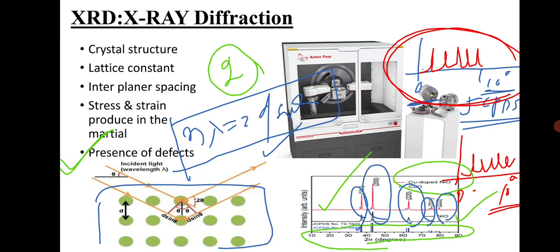This is the brief description of the XRD data and about XRD. That is why we are using XRD in order to get a lot of information about the crystal structure of the material, strain, stress, interplanar spacing, lattice constant, and the presence of defects. This is all about XRD.